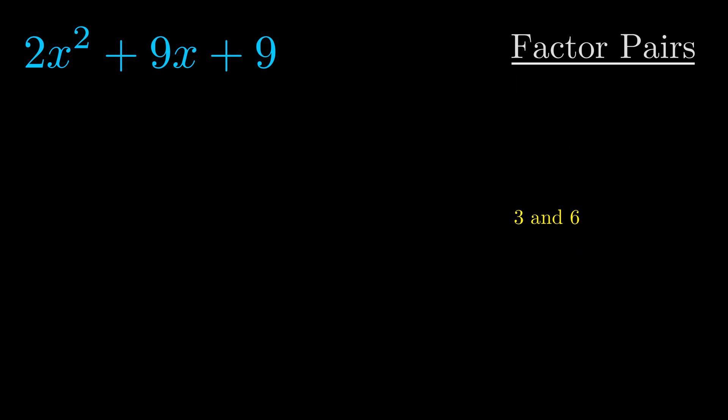Now once we have this factor pair what we want to do is we want to use it to split up the b value.